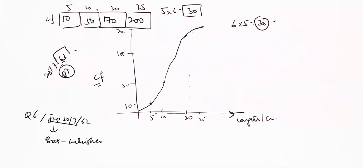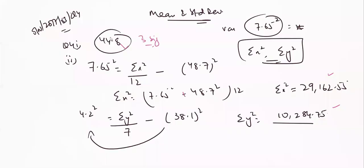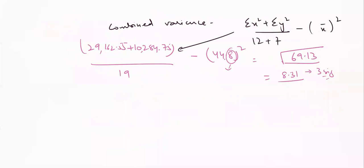One question on continuity correction and suitable approximation — this is question number 7, June 2018 paper 62. Also look at this question for approximation. For mean and standard deviation, refer to October/November 2017 paper 63, question 4 — the mean and standard deviation part specifically.